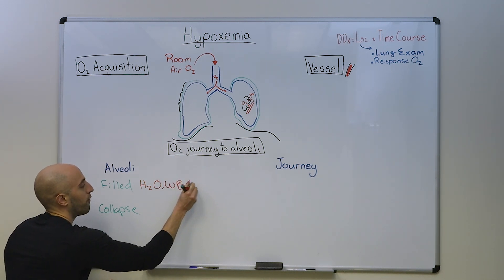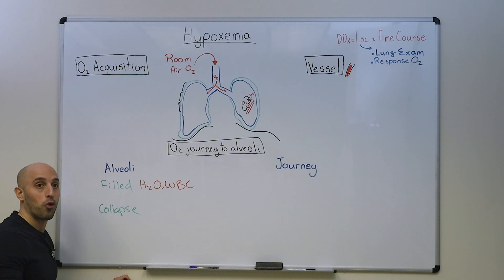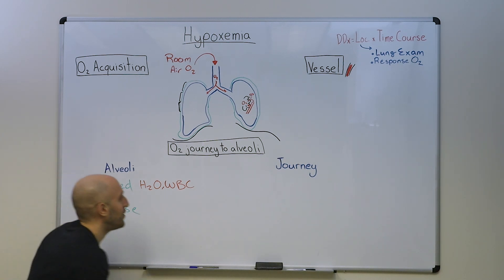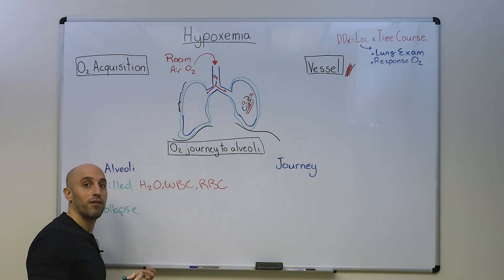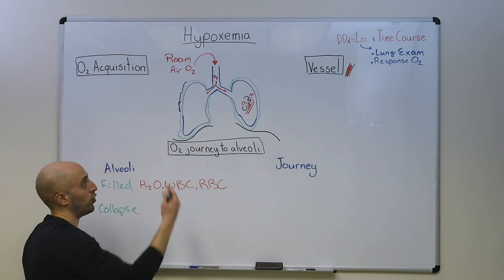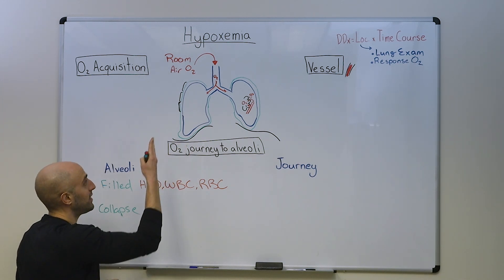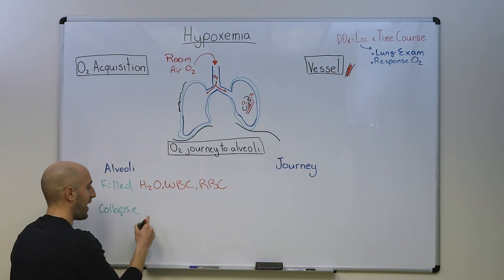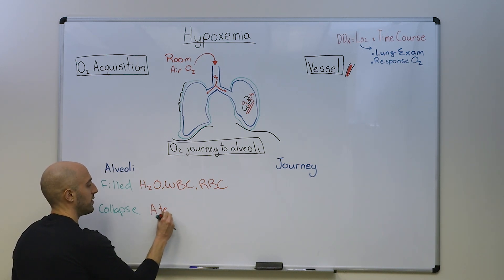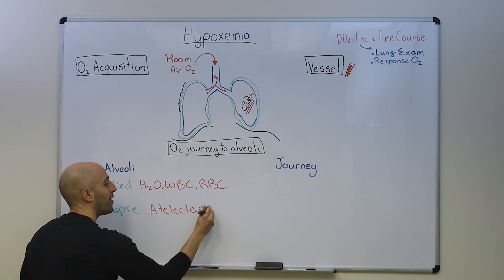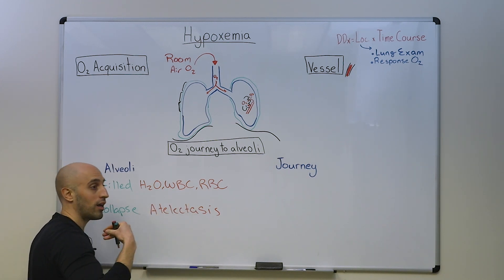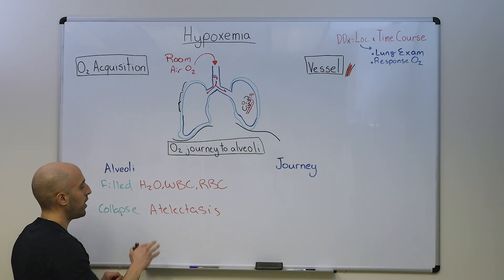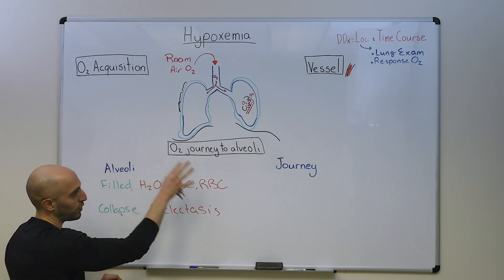White blood cells — for example, pneumonia, aspiration pneumonitis, or hypersensitivity pneumonitis — and even red blood cells, for example in someone with diffuse alveolar hemorrhage. Other substances like protein and cancer can also infiltrate the alveoli leading to hypoxemia. When the alveoli collapse, this is referred to as atelectasis, and if you get enough collapse of alveolar units, this will impair gas exchange leading to true hypoxemia.